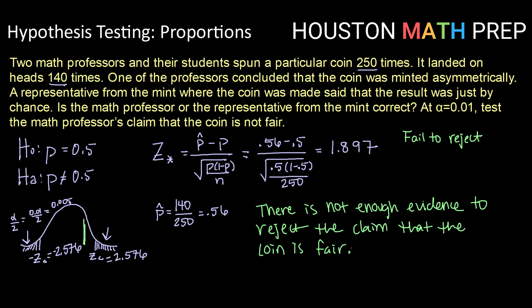So there's not enough evidence to reject that this coin is actually a fair coin. So in this case, that would mean that the representative from the mint was correct. It seems like this is actually just by chance.